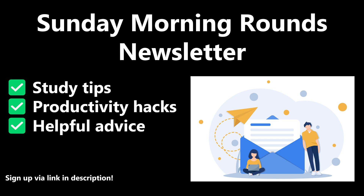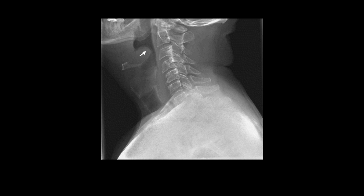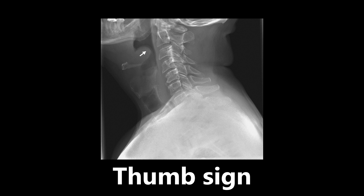Let's get started. First image: we're looking at a lateral neck x-ray with a thumb sign. It kind of looks like a thumb, and this is a sign of epiglottitis. In a pediatric patient with respiratory distress, if we get a lateral neck x-ray and see this thumb sign, we want to be thinking about epiglottitis. Not as common anymore with vaccines, but definitely something you need to be aware of — this is a big airway problem.